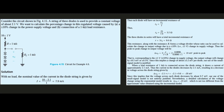We're going to consider the circuit shown in the figure. A string of three diodes connected in series is used to provide a constant voltage of about 2.1 volts. We get 2.1 volts because each diode is 0.7 volts, and since we have three of them, 3 times 0.7 gives us 2.1 volts.